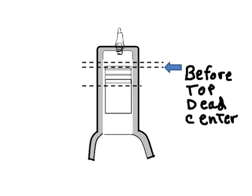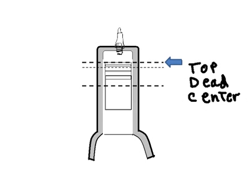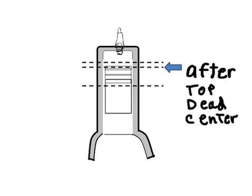There we go, and it hits that point called before top dead center, also known as BTDC. Now it hits TDC - top dead center. Now it starts its travel back downwards.